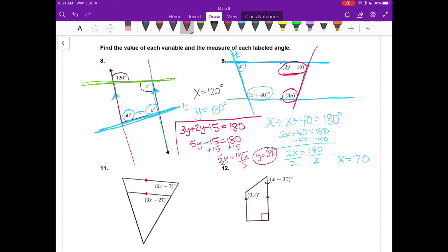Now it also wants us to find the angles. If X is 70, we have 70 degrees here. 70 plus 40 would give us the bottom left angle, which would be 110. 3 times Y is 3 times 39 would give us 117 degrees. And if I take 2 times 39 minus 15, that gives us 63 degrees.